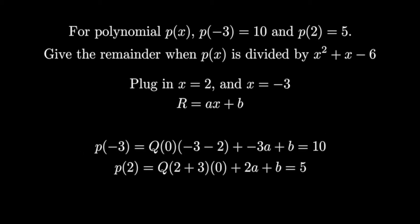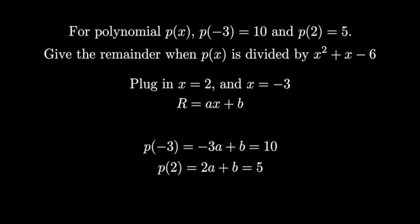But in this case we get a system of equations in terms of a and b. Solving this system of equations, we get that a equals negative 1 and b equals 7. Therefore, r has to be negative x plus 7.